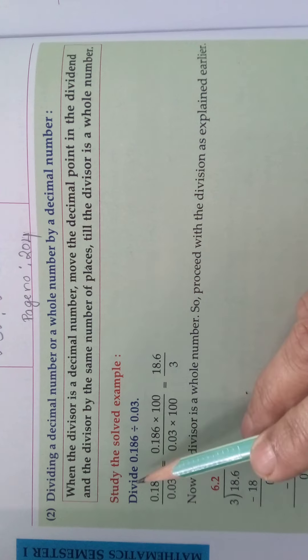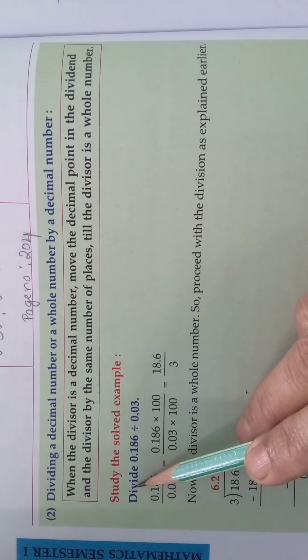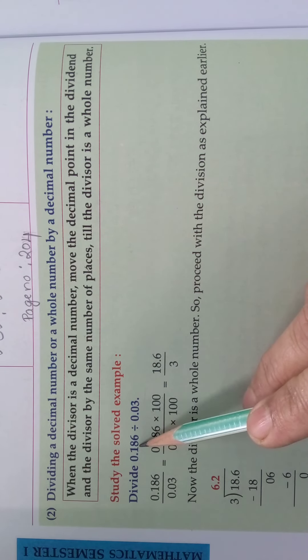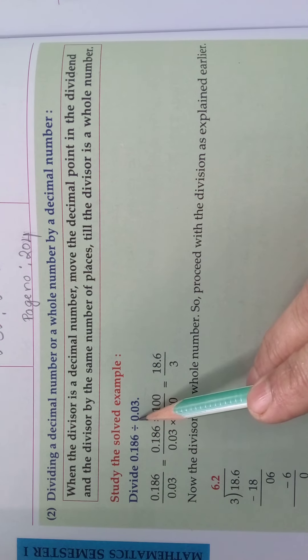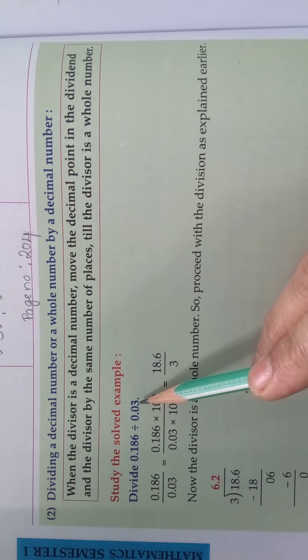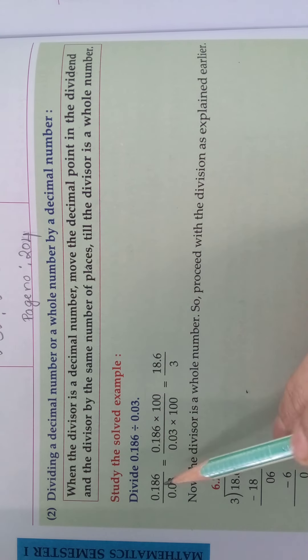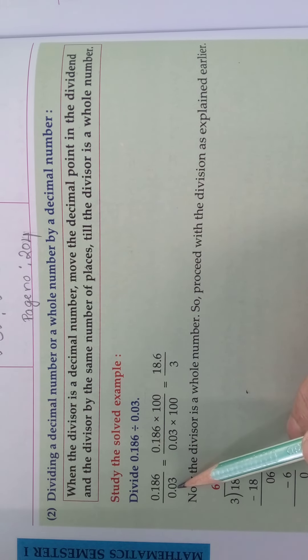So what we should do? Look here, see the example sum: divide 0.186 divided by 0.03. So here we are going to divide that by a decimal number. So what we should do? We should move the decimal point.